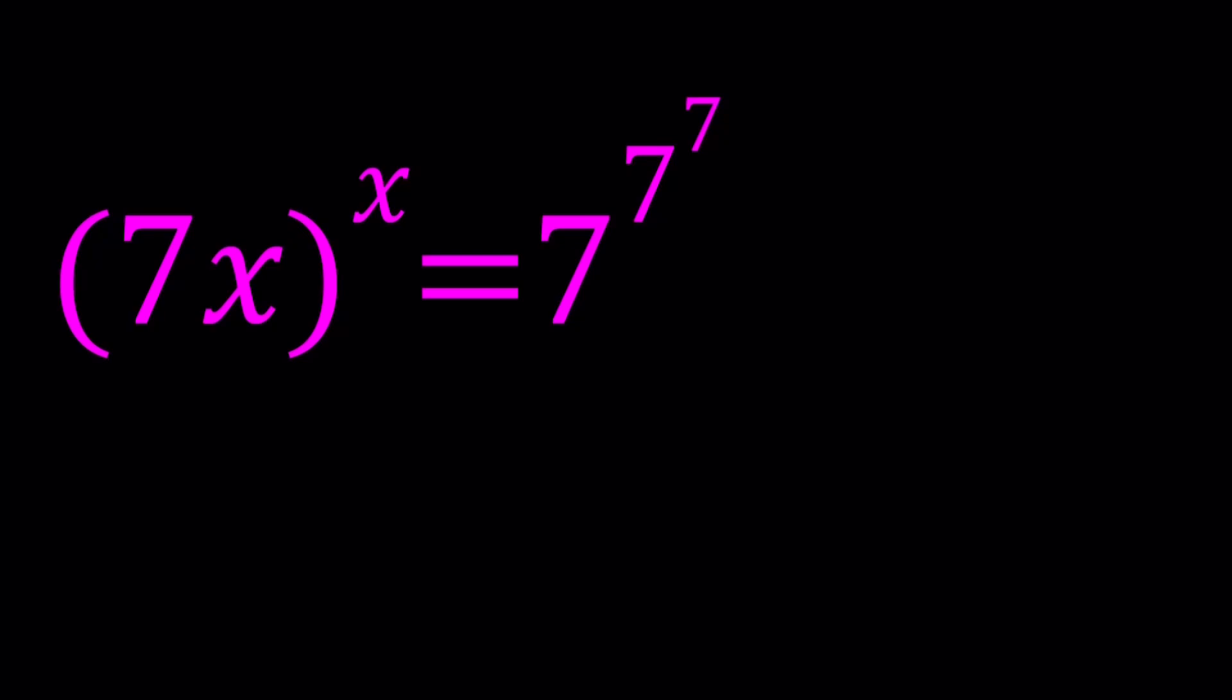Now, in this problem, if you go ahead and distribute the x and write this as 7 to the power x times x to the power x equals 7 to the power 7 to the power 7, you're going to be in trouble. Why? Because this is probably not going to lead anywhere.